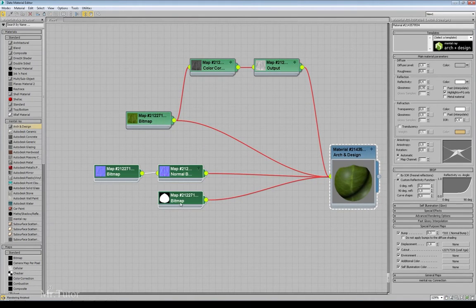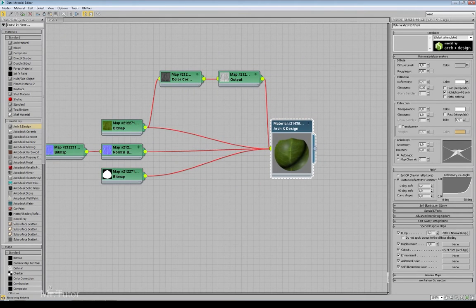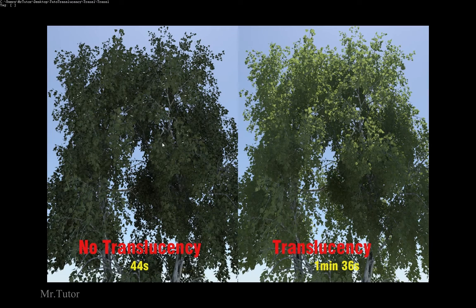Let's move to the other effect — the translucency effect. Here I have an example of a render I did. This is without the translucency effect and this is with the translucency effect. You can see the difference — it looks much more realistic. This took 44 seconds to render, and this is 1 minute 36 seconds to render, so it takes way more time, but I think the effect is worth the time.